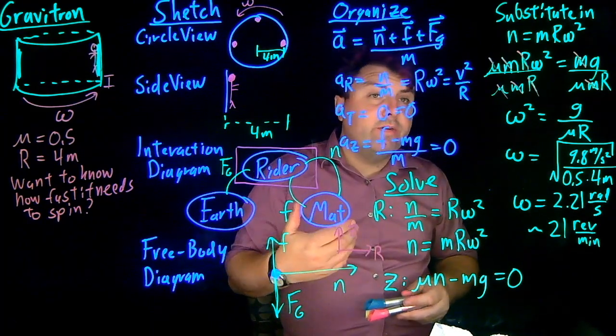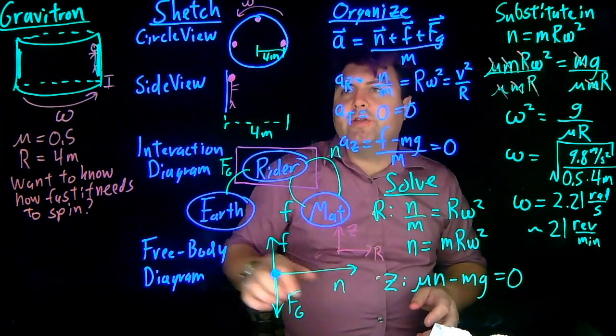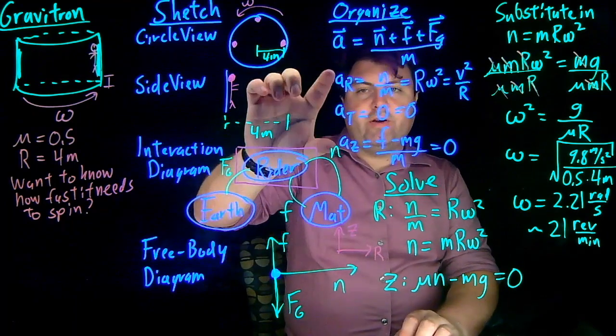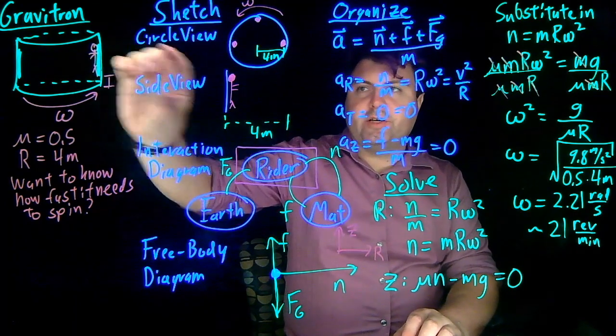So that's how we do problems in circular motion. We're doing the same steps of sketch, organize, and solve. Just now we are decomposing into two different directions, and we have two different views.